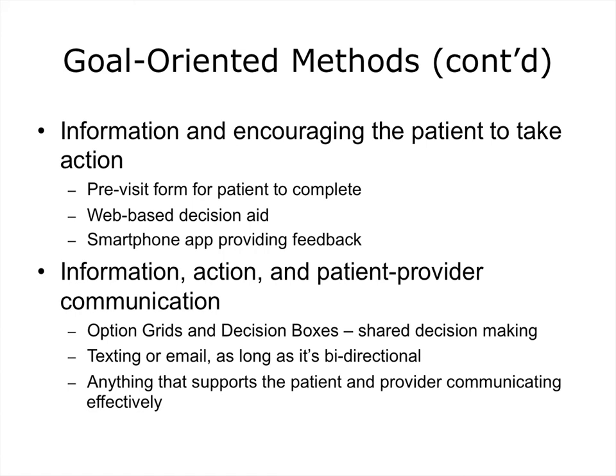The second goal-oriented method is to provide the patient with information and then encourage them to take action. For example, this might be a pre-visit form for the patient to complete, which may highlight areas that you would like the patient to ask you about. You might have a web-based decision aid, especially with patients who have chronic illnesses such as diabetes. Or it could be something like a smartphone app providing feedback — for instance, wearable activity monitors where you ask the patient to use the monitor, hopefully with the expectation that it will help them increase their activity levels.